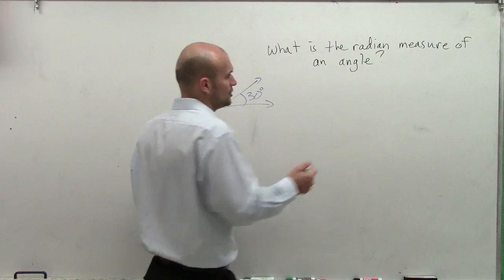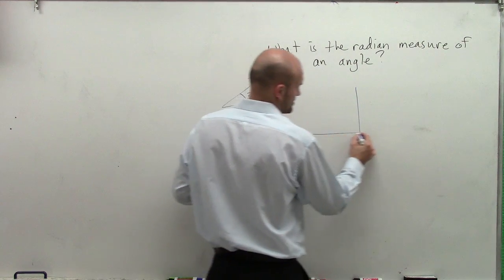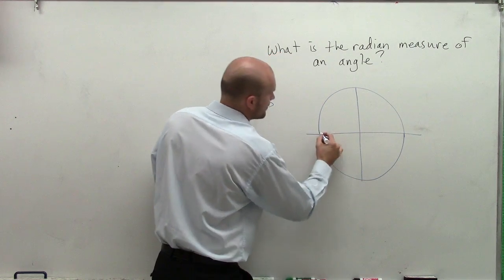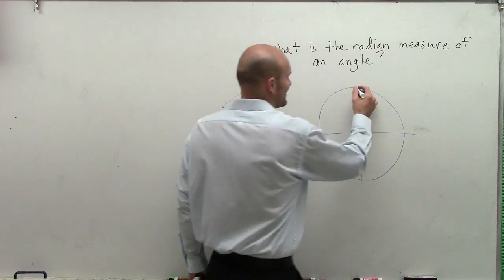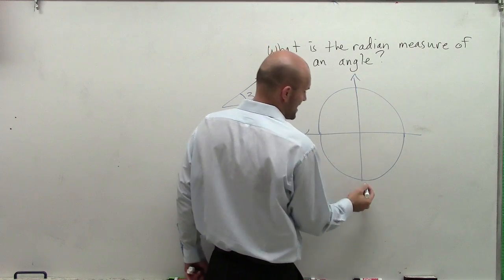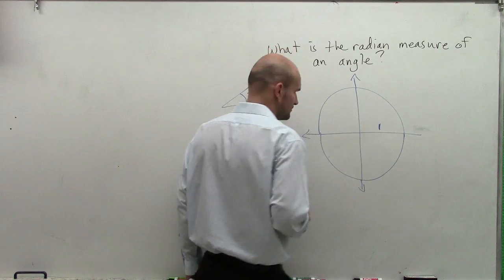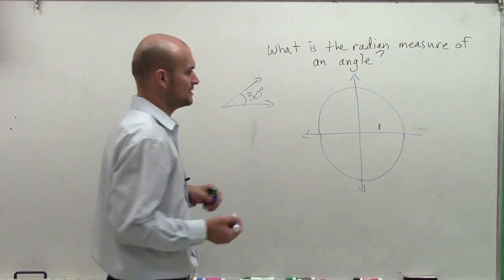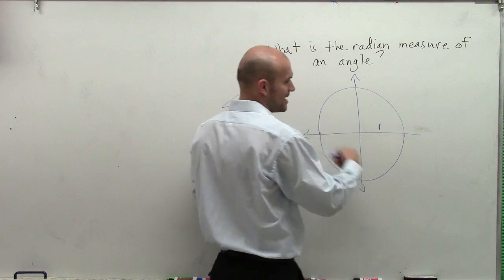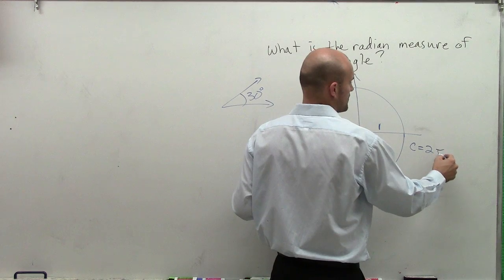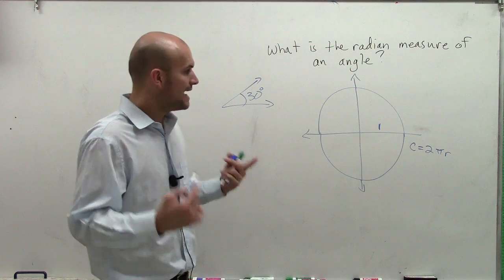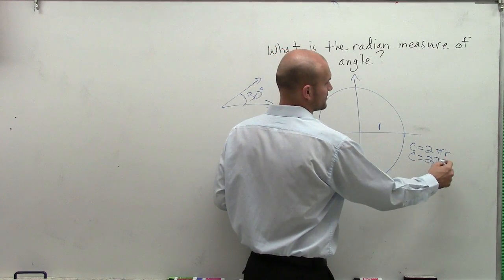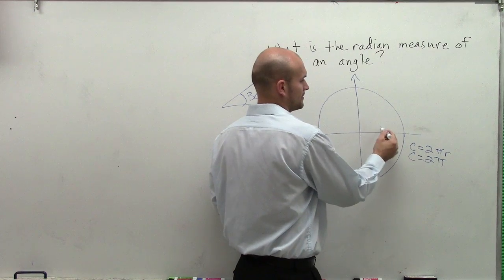To talk about radian measure, we need to look into a circle and talk about some things. I'm going to create a circle with a radius of 1. Remember that the circumference — the distance around a circle — is 2πr. In this problem, since r equals 1, the circumference is just going to be 2π.